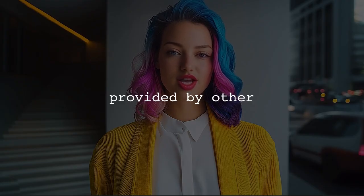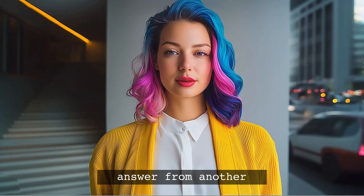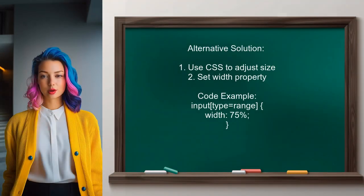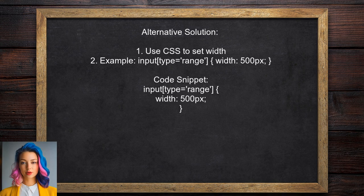Now let's look at the answers provided by other users. An alternative solution is to set the width of the range input using CSS, applying a style directly to the input element. Another user suggests that the size attribute won't work for the range input — instead, use CSS to adjust its size by simply setting the width property to your desired percentage. Yet another user recommends setting the width property to 500 pixels.